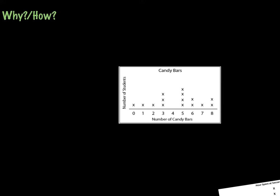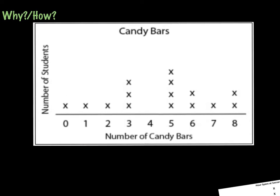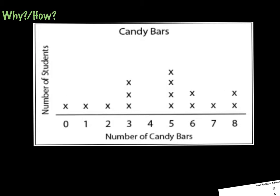So let's take a look at the how. First, we're going to refresh your memory on what a line plot is. As we look at this line plot, we can see it has a title called Candy Bars. On the left side we can see the number of students, and at the bottom we can see the number of candy bars.